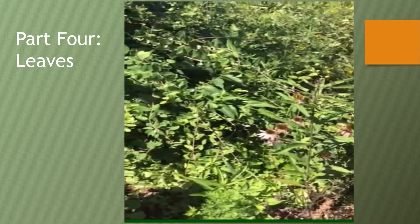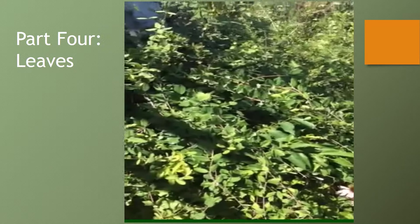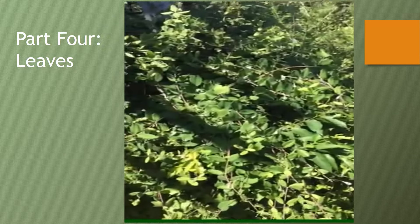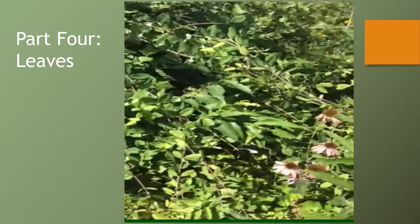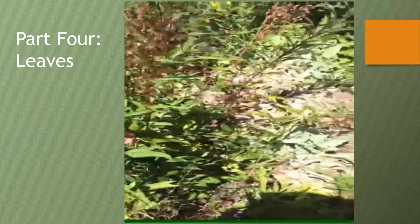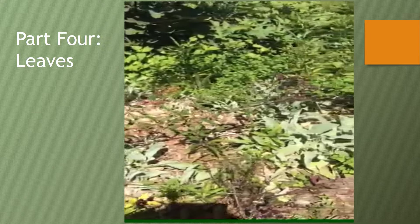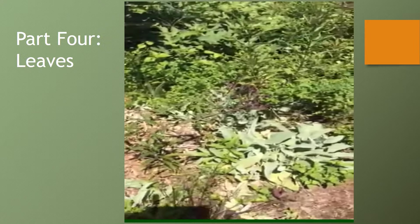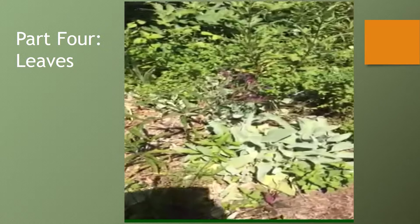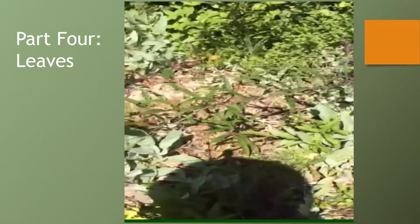Now we're going to move on to the third part of a plant: the leaves. The leaves are the plant organ that produces food by a process called photosynthesis. Leaves can grow on the side or end of the stem.